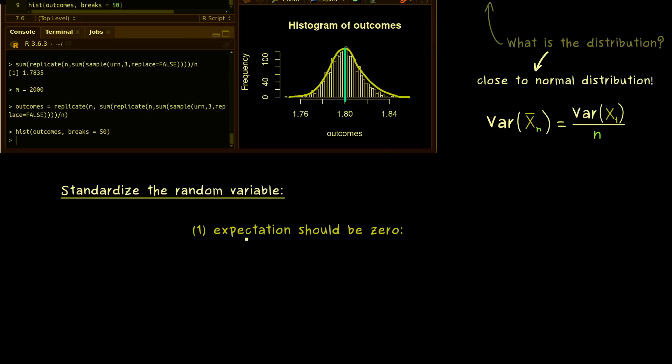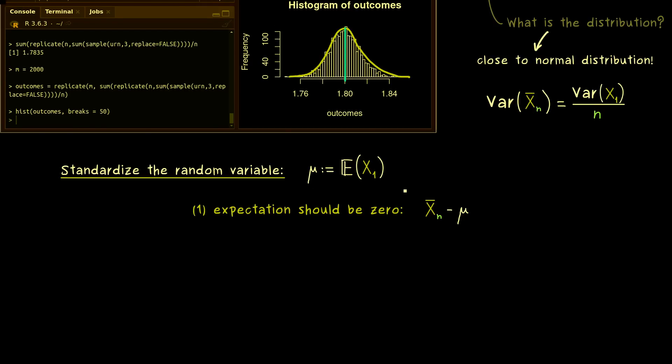So first, we want to have that the expectation is at the origin. So instead of 1.8, we want to have 0 here. This is easy to get. From x over line n, we just subtract the expectation of x1. And as always, this one we just call mu.